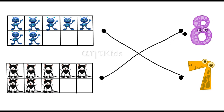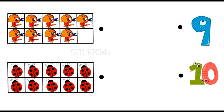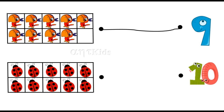How many cats in this tens frame? One, two, three, four, five, six, seven, eight — eight cats in this tens frame. How many birds here? One, two, three, four, five, six, seven, eight, nine — nine birds in this tens frame.